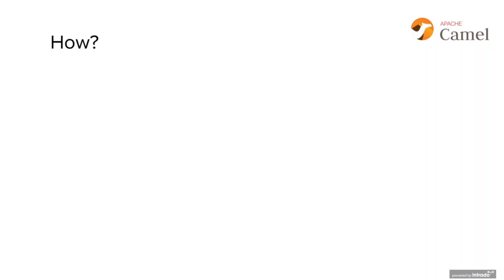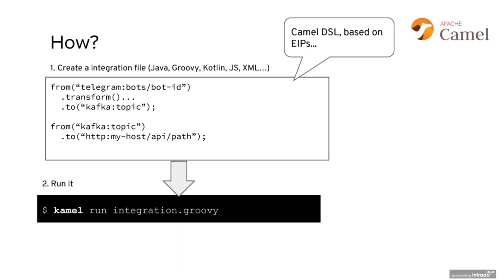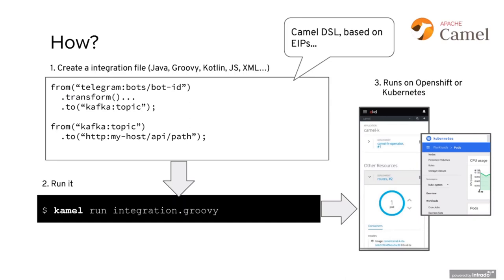CAMEL-K is targeting the low-code, no-code movement for serverless and lightweight integration. As a developer, you just want to focus on the integration and not care about runtimes — you just want to let it run in the cloud. In CAMEL-K you can do that in a single file — a Groovy file in this example. You say: receive messages from a Telegram bot, do some message transformation, send the message to a Kafka topic, then listen to the same topic and call a service. That's just a single file. You run it with 'kamel run' and the filename, and then it runs in the cluster in the cloud.